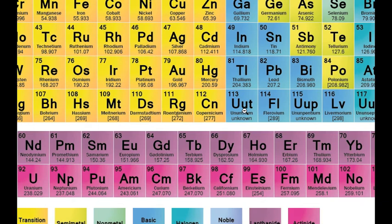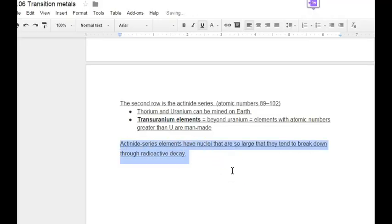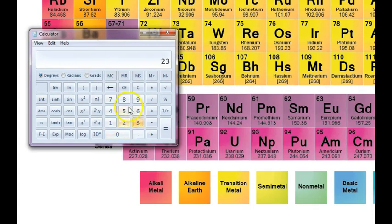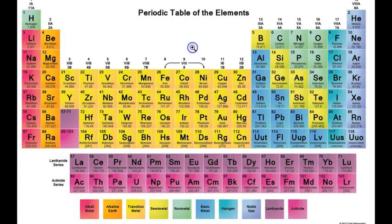All of these with atomic numbers greater than uranium are man-made. Actinide series elements have nuclei that are so large they tend to break down through radioactive decay. For example, uranium has a mass number of 238 and an atomic number of 92 — so it has 92 protons and 146 neutrons (238 minus 92). There are a lot more neutrons than protons, and that's part of what makes it unstable. So it breaks apart and decays into different elements. We'll talk a lot more about that in a different unit.